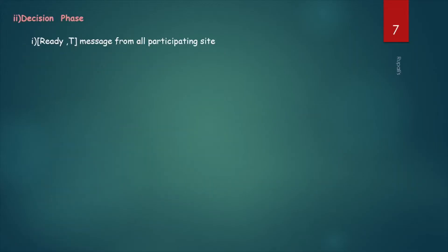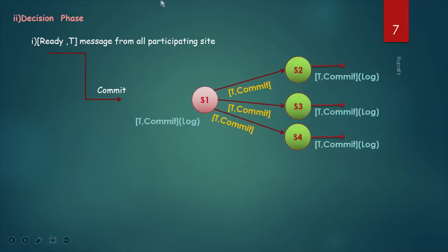Next phase is the decision phase. If all participating sites are ready to commit — that is, they all send a ready message to the coordinator site — then the coordinator site writes T-commit in its own log and sends that message to all participating sites that they can commit. All participating sites then commit and write T-commit to their own logs.